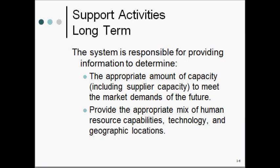At this stage, what we are looking at is to ensure that an appropriate amount of capacity — which could include suppliers' capacity — is available. We also want to provide the appropriate mix of human resource capabilities, technology, and geographic locations. This is where we are looking at a horizon greater than one year, maybe five years, to understand if what we want to do as an organization — do we have the necessary capability and capacity? That would be the long-term support activities associated with manufacturing planning and control.